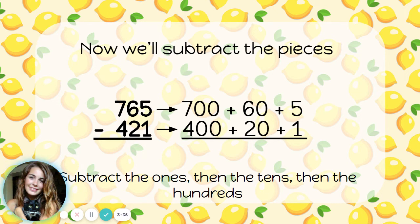Just be careful. I know there's a lot of plus signs in this problem right now. Those are just part of writing the numbers in expanded form. Remember that this is a subtraction problem, so this time I need to be subtracting. 5 minus 1 is 4. 60 minus 20 is 40. And 700 minus 400 is 300.